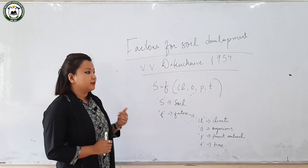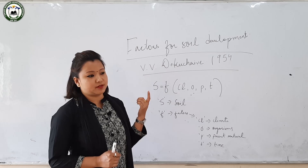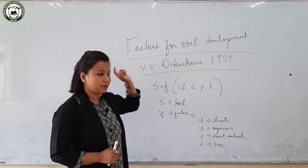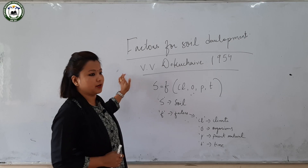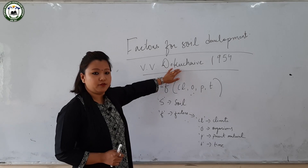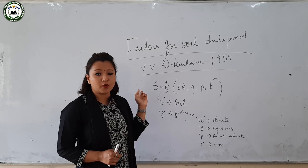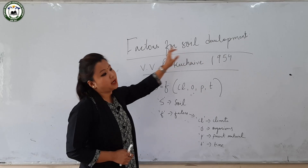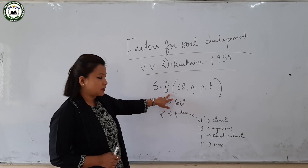Before moving into soil genesis or soil forming processes, I would like to highlight the factors for soil development. The concept was built by V.V. Dokuchaev in the year 1954. Dokuchaev was a famous Russian soil scientist and the first to describe the factors for soil development. He described these factors in an equation: S = f(Cl, O, P, T), where S refers to soil, f refers to factors.